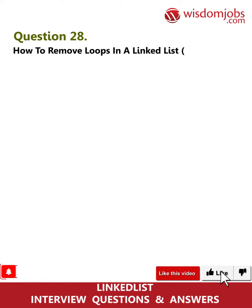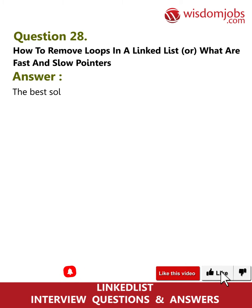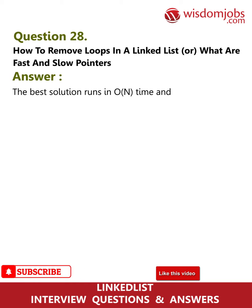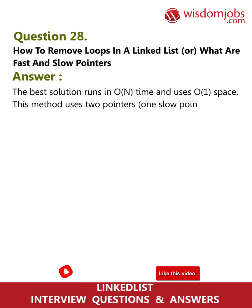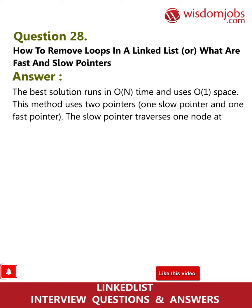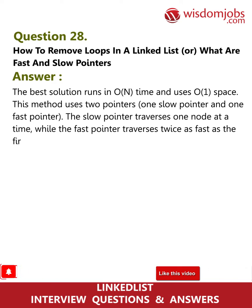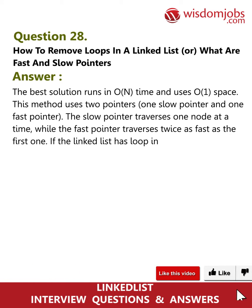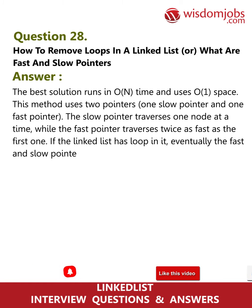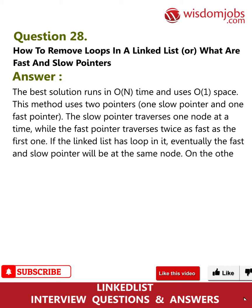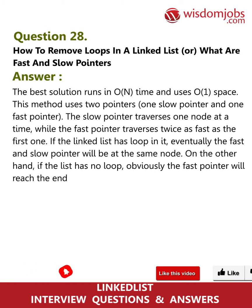Question 28: How to remove loops in a linked list, or what are fast and slow pointers used for? The best solution runs in O(n) time and uses O(1) space, using two pointers: one slow pointer and one fast pointer. The slow pointer traverses one node at a time while the fast pointer traverses twice as fast. If the linked list has a loop, the fast and slow pointers will eventually be at the same node; if there is no loop, the fast pointer will reach the end before the slow pointer, thus detecting a loop.